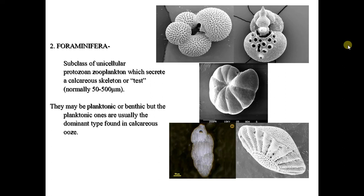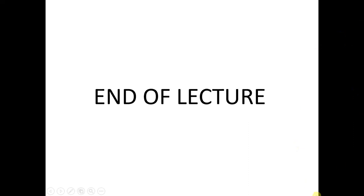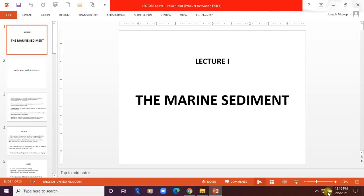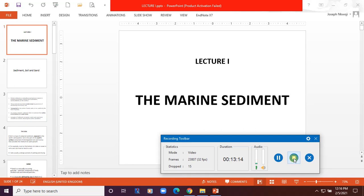If you want to get more information on any of them, just pause and get the information before you proceed. Skeletal sediment constituents include phytoplankton, which can be calcareous or siliceous, zooplankton, which can also be calcareous or siliceous, and nekton. These are the major constituents of biogenic sediment in the ocean. This is the end of the lecture. We want you to get the best of the lecture and prepare for any further assessment coming subsequently. Thank you so much and God bless you.